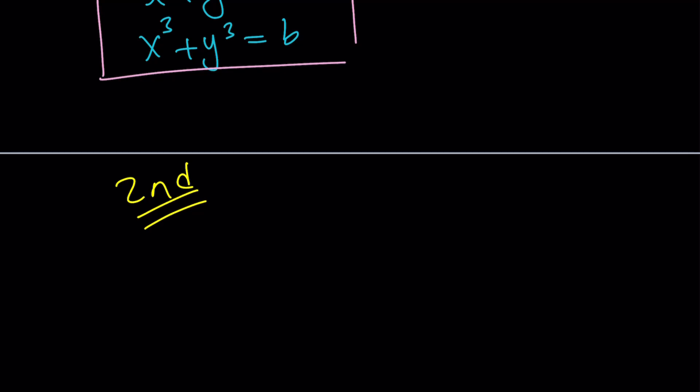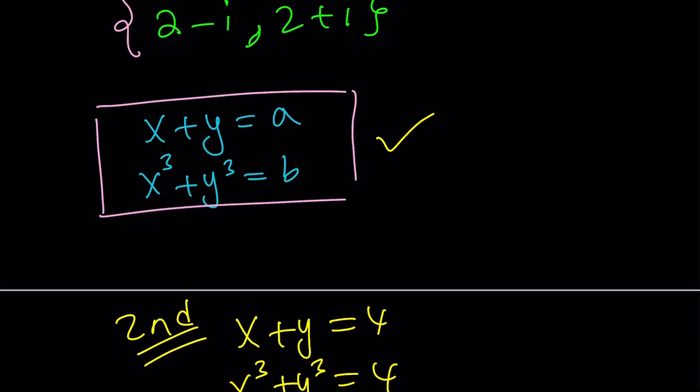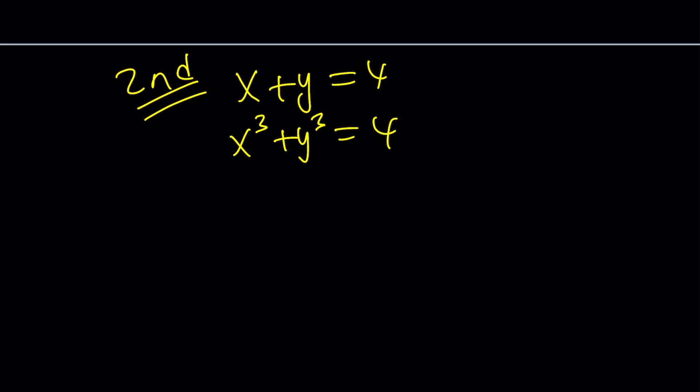So for our second method, let me rewrite the problem. x plus y equals 4, and x cubed plus y cubed equals 4. By the way, this general case is an interesting problem, because depending on the values of a and b, you're going to get different sets of solutions. So with the second method, instead of just substitution, we are going to use some identities.